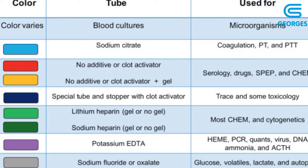Now I'll break down the correct order of draw. First: blood culture tubes. After blood culture tubes, go to the light blue tube with sodium citrate for coagulation studies like prothrombin time and activated partial thromboplastin time. Then the red top for serological testing requiring serum. Then the gold top (SST — serum separation tube). Then the green top. Then the lavender top used in hematology. Then the pink top for blood bank studies. Then the gray top. Then the royal blue. That is the correct order of draw.